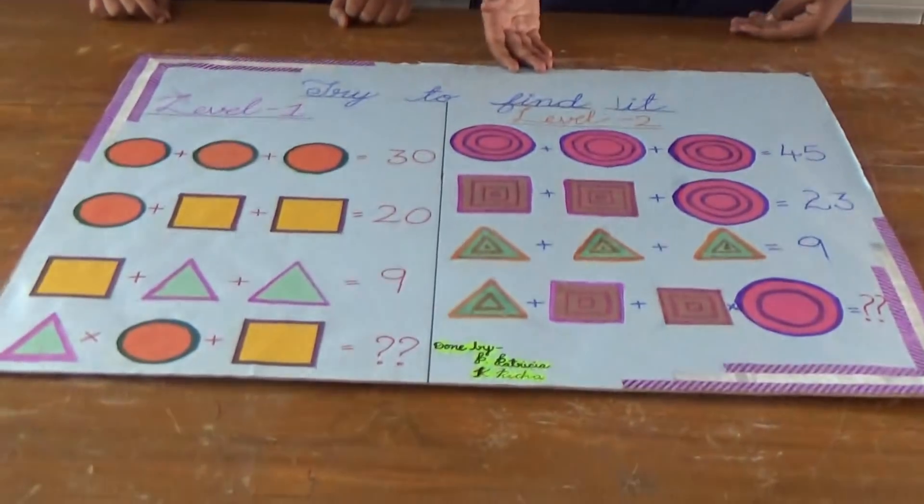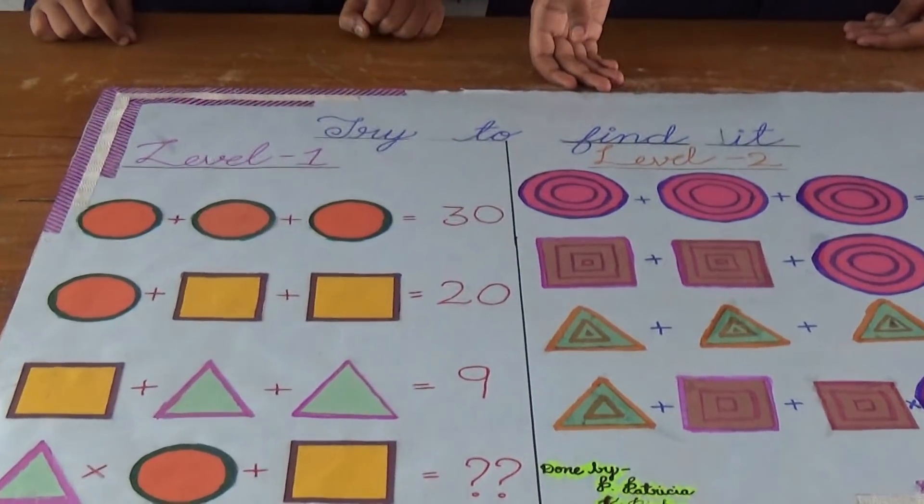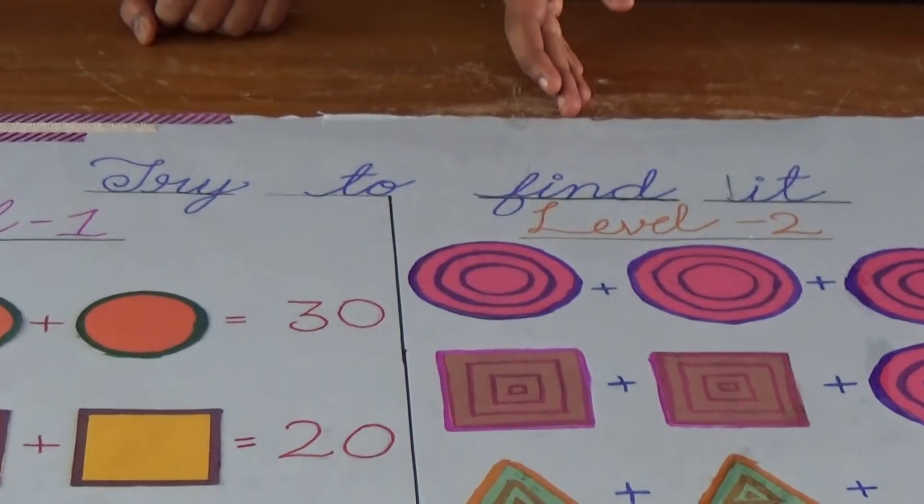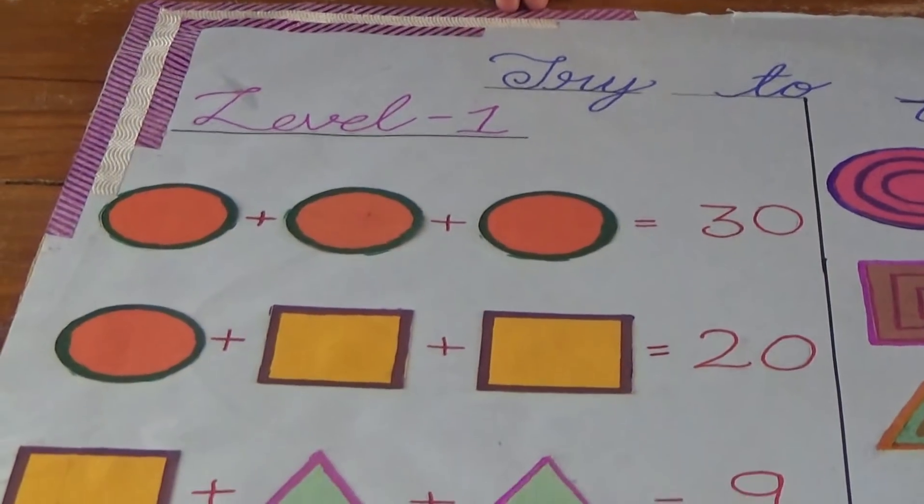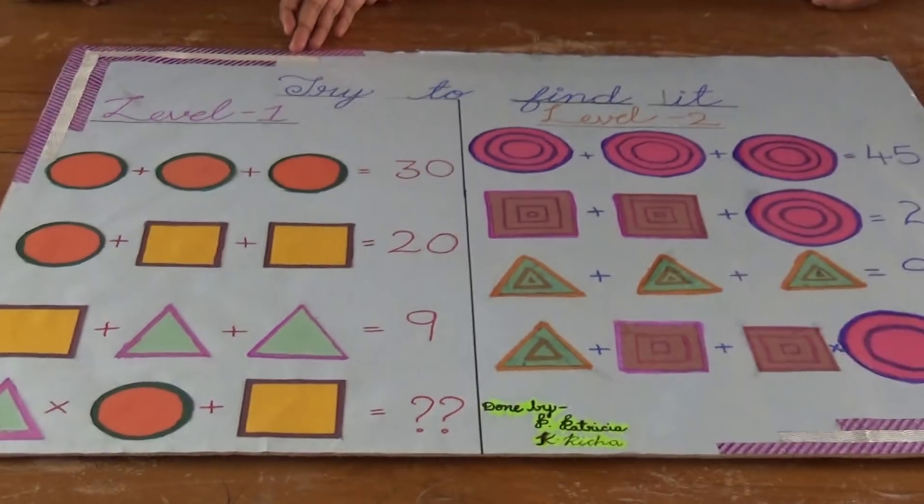The materials we used in this project are—we first took a cardboard and placed a chart upon it. We have done some decoration to make it attractive. This part is optional.